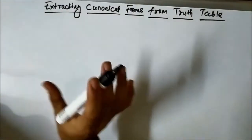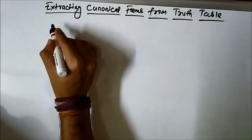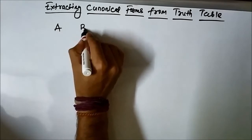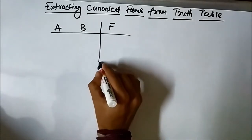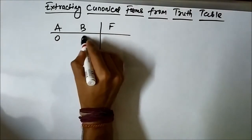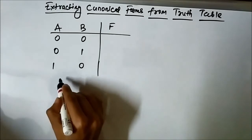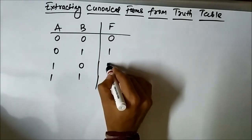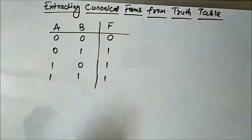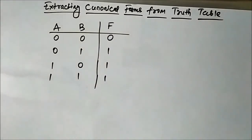We are considering two variables for simplicity: two input variables A and B, and the output F. The input combinations are 0 0, 0 1, 1 0, and 1 1, and the corresponding output is 0, 1, 1, 1. This is the truth table available to us. From this truth table we have to determine the boolean expressions of the output in SOP and POS form, applying all that we have studied in the basic concepts.